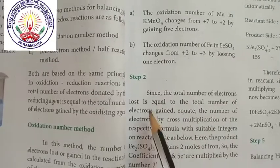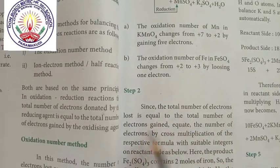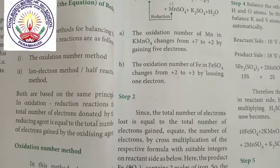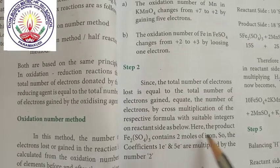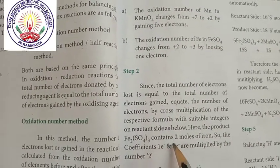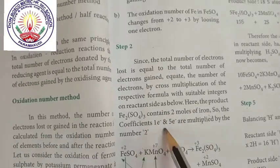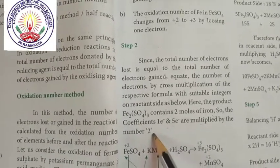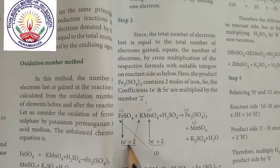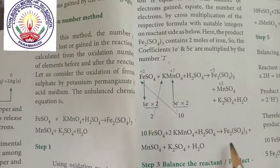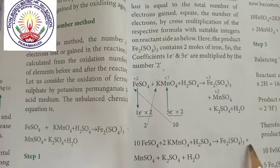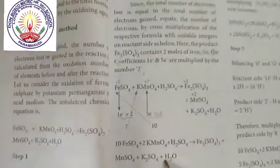Step 2: Since the total number of electrons lost must equal the total number of electrons gained, equate the electrons by cross multiplication of the respective formulae with suitable integers on the reactant side. The product Fe₂(SO₄)₃ contains 2 moles of iron, so the coefficients of 1 electron and 5 electrons are multiplied accordingly — giving 10 FeSO₄ plus 2 KMnO₄ plus H₂SO₄ yields Fe₂(SO₄)₃ plus MnSO₄ plus K₂SO₄ plus H₂O.